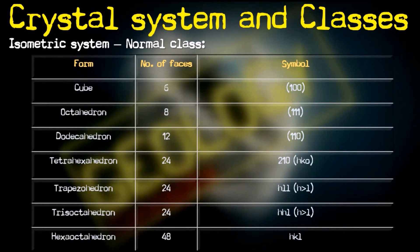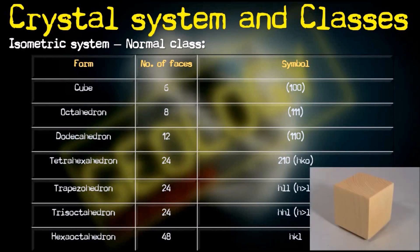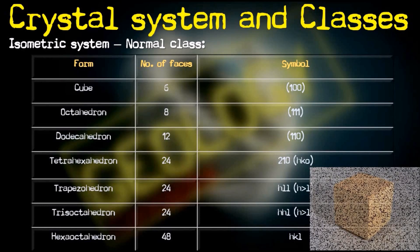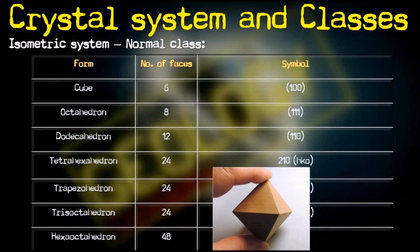We have seen the isometric system divided into five classes. The normal class is further divided into seven forms. The first form is the cube — a six-faced closed structure with Miller indices symbol {100}. Then there is the octahedron, where each face is an equilateral triangle and there are eight faces with symbol {111}.